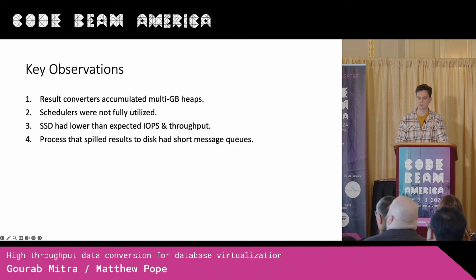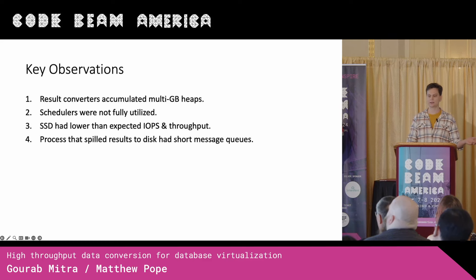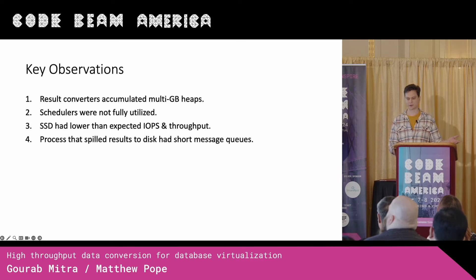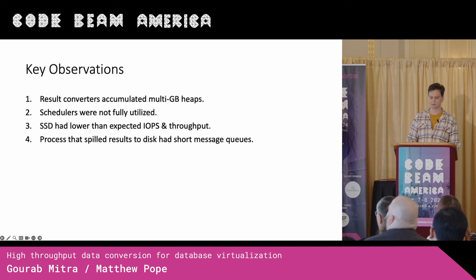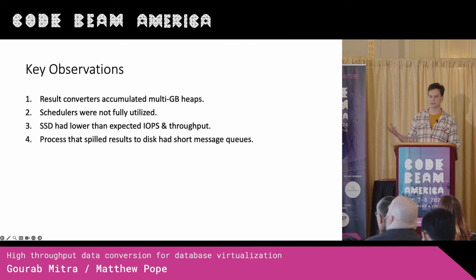From these experiments, we relied on a few key observations. The first was that it was easy to reproduce that the result converters accumulated multi-gigabyte heaps. A second observation is that the scheduler utilization was lower than we expected — there were a few idle schedulers on these VMs, and we ran on relatively large ones, around 16 to 32 cores. We also noticed that the SSDs were not being fully utilized. We were using Azure premium SSDs which could get up to 5,000 IOPS, and we were getting nowhere near close to that. Finally, the process that spills results to disk when they do not fit into memory had relatively low message queues.